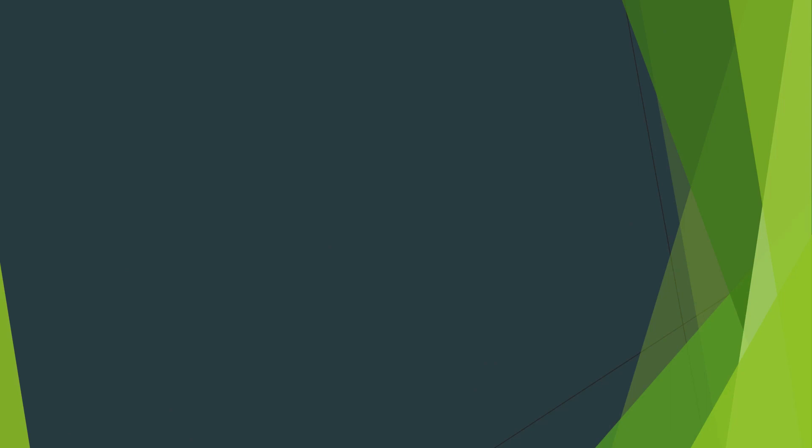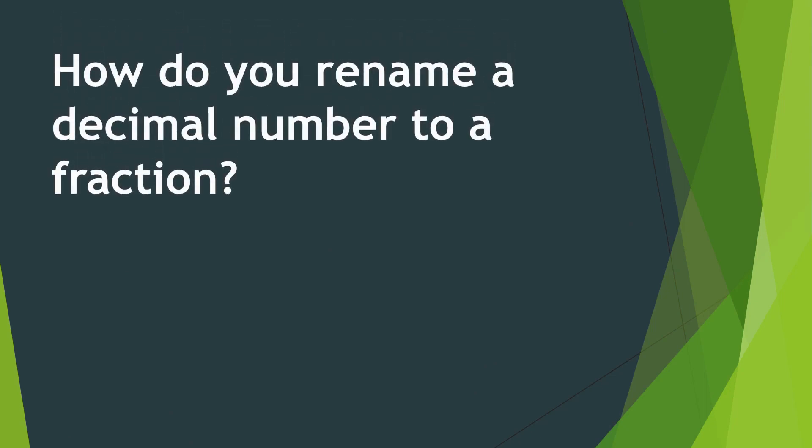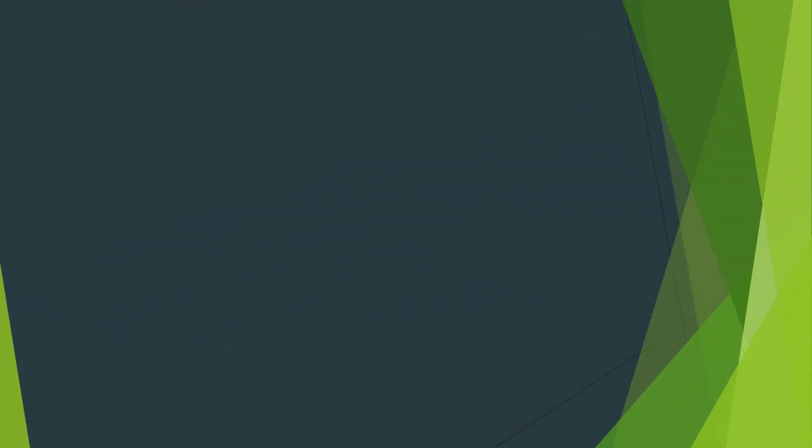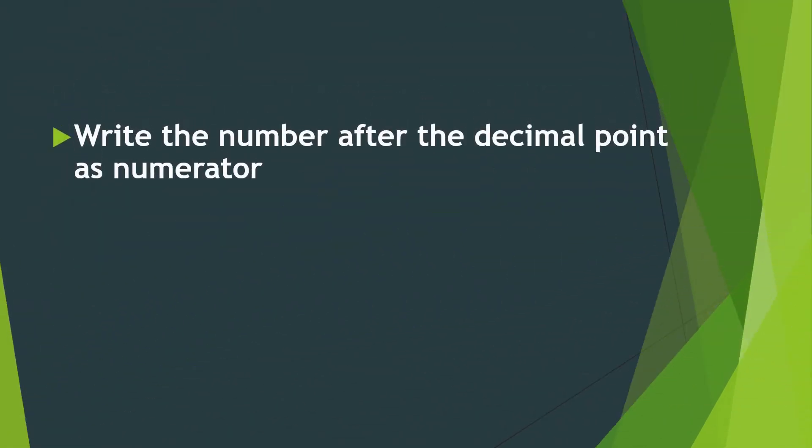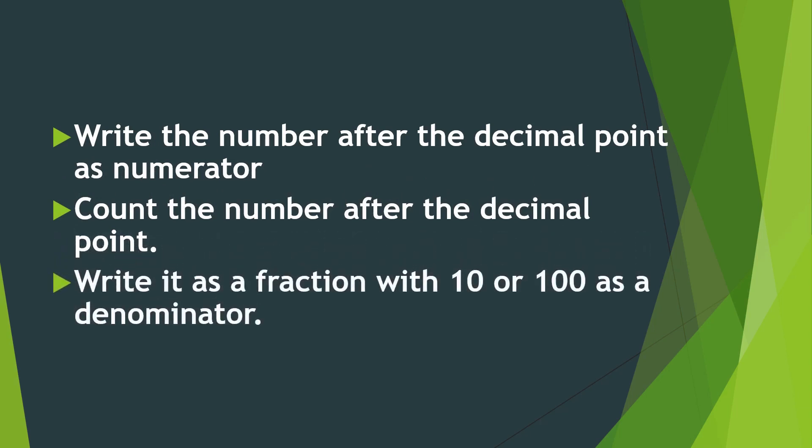How do you rename a decimal number to a fraction? You can rename a decimal number to a fraction by: First, write the number after the decimal point as the numerator. Next, count the number after the decimal point. Then, write it as a fraction with 10 or 100 as a denominator. And reduce your answer if necessary.